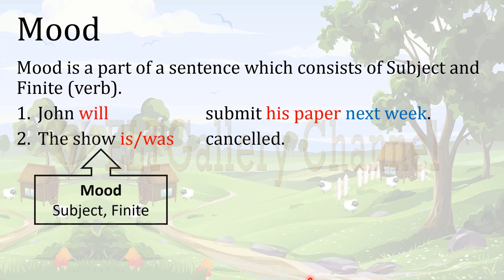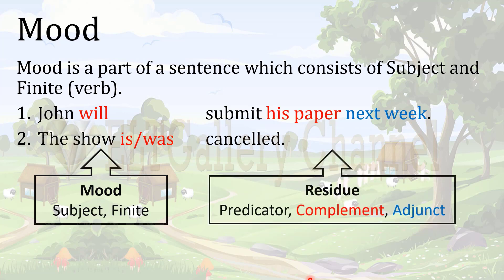'Submit his paper next week' and 'cancelled' are what we call the residue. It includes the predicator — the non-finite verb like 'submit' or 'cancel' — the complement, which is the object in traditional grammar, such as 'his paper,' and the adjunct, such as 'next week.' So the residue is the rest of the sentence besides the finite: predicator, complement, and adjunct.